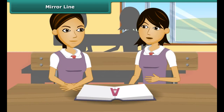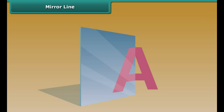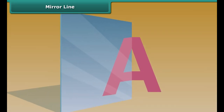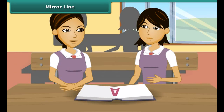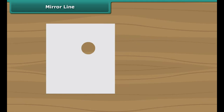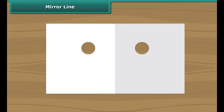Now let's check whether the line drawn on A is the line of symmetry or not. We take its one half and place it in front of a mirror. Wow! Its one half is equal to the other half — this means that this is the line of symmetry. Let's play a game now. Which game? The punching game! In this game, we will fold these papers and punch a hole. Now open these papers. We can see two holes which are symmetric. The fold is a line of symmetry.